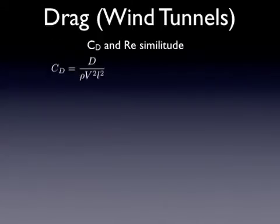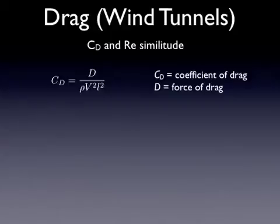Wind tunnels are quite useful. And the two pi numbers that we use most often in wind tunnels are the coefficient of drag and the Reynolds number. We'll talk about drag in the next lecture. The coefficient of drag is equal to the drag force divided by the density and the velocity and the length.